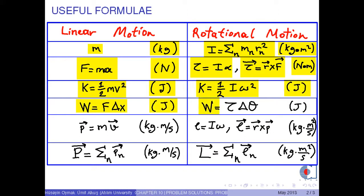Rotational kinetic energy is one-half I times omega squared, and rotational work is torque times delta theta. Corresponding to linear momentum in linear motion, we have angular momentum in angular motion, with magnitude I times omega. Since it is a vector, it is also calculated as R cross P. Finally, total linear momentum is calculated by the sum of the individual linear momenta of single particles.